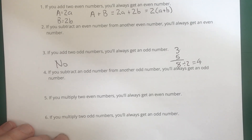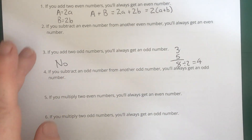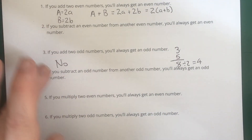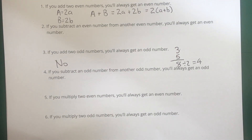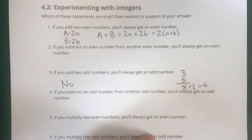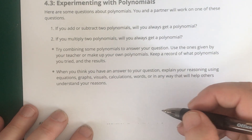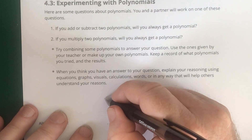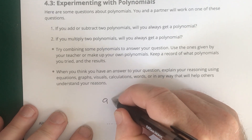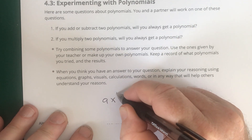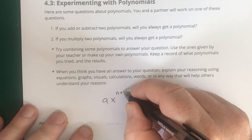Now let's try even numbers. Let's see if you add two even numbers, you'll always get an even number. Let me define little a as an integer and little b as an integer. And let me define capital A as 2 times little a, and capital B as 2 times little b.